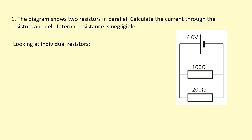The diagram shows two resistors in parallel. Calculate the current through the resistors and the cell; internal resistance is negligible. I'm going to do this by looking at the individual resistors firstly. If there's six volts across the cell, then it has to be six volts across this and six volts across this, because they're all in parallel with each other.